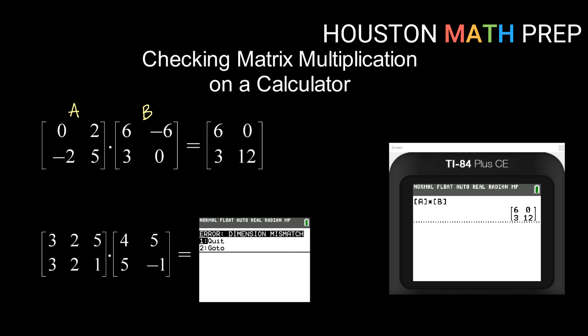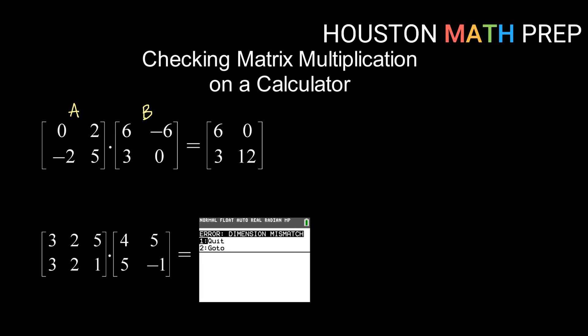For this next one, this was the one we just looked at. We saw that we had a 2 by 3 times a 2 by 2. Since our inner dimensions did not match, this was not a possible matrix multiplication.